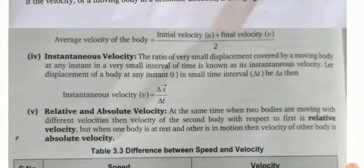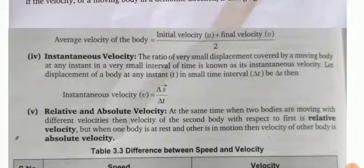Next is instantaneous velocity. The ratio of very small displacement covered by a moving body at any instant in a very small interval of time is known as its instantaneous velocity. Let displacement of a body at any instant in small time interval delta t be delta s, then instantaneous velocity V is equal to delta s vector by delta t.